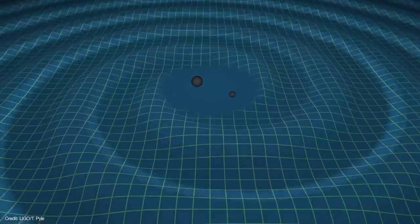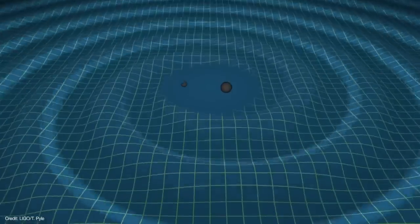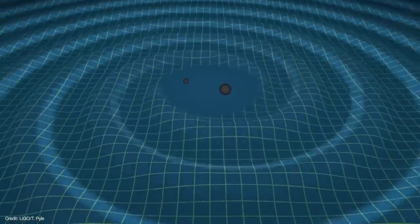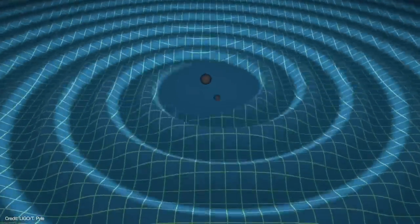During the in-spiral, the black holes radiate away gravitational energy, which causes them to lose angular momentum, which causes them to spiral in closer and accelerate faster. This runaway in-spiral continues until the black holes are orbiting each other hundreds of times a second.